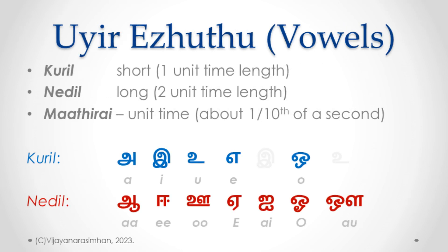The vowels, Uir Erut, are further classified into Kuril and Nedal. Kuril means short and Nedal means long. Short and long basically refer to the time duration for which these vowels should be pronounced.